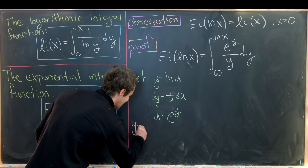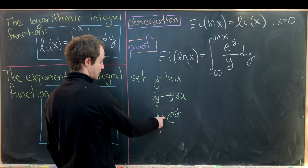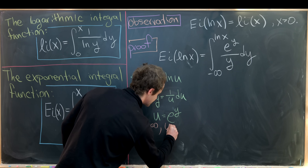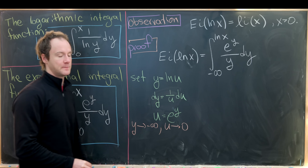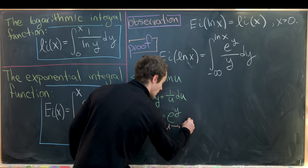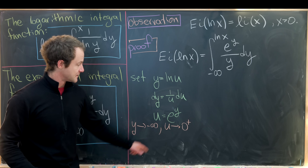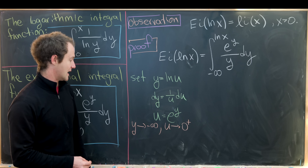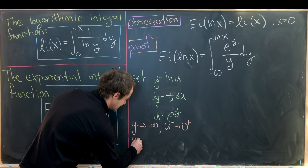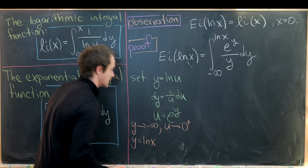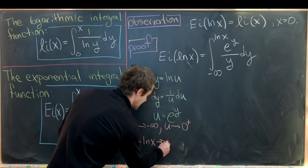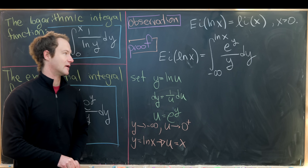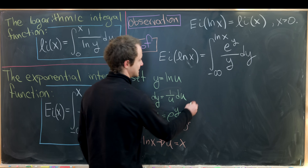Now let's transform the bounds of integration. As y approaches negative infinity, u approaches e^(−∞), which is 0, and importantly u approaches 0 from above since e^y is always positive. At the upper bound, if y equals ln(x), then u equals e^(ln x), which is just x. So our new upper bound is x.